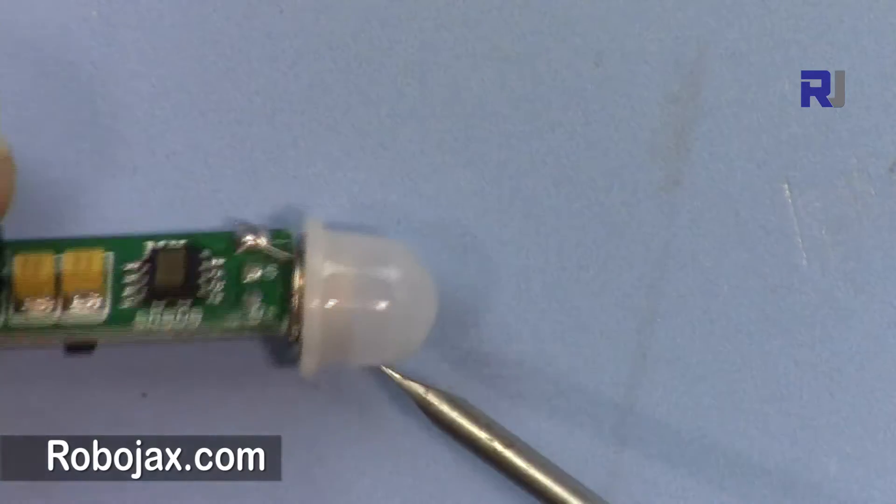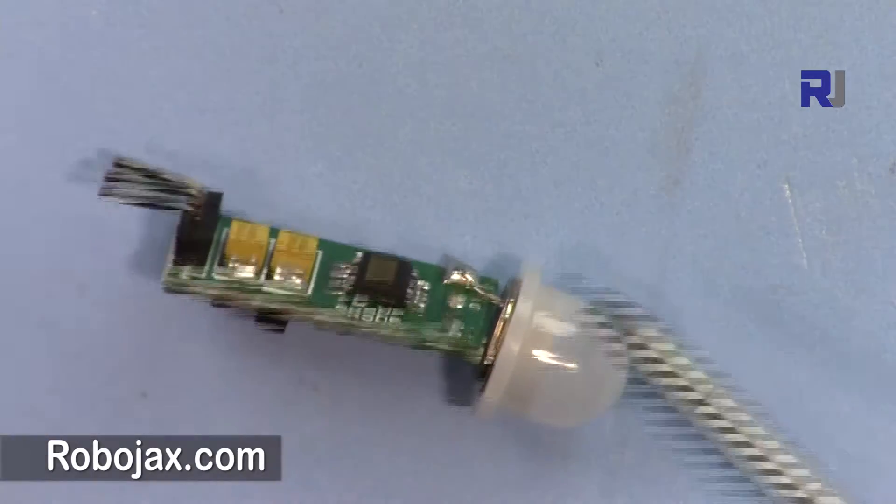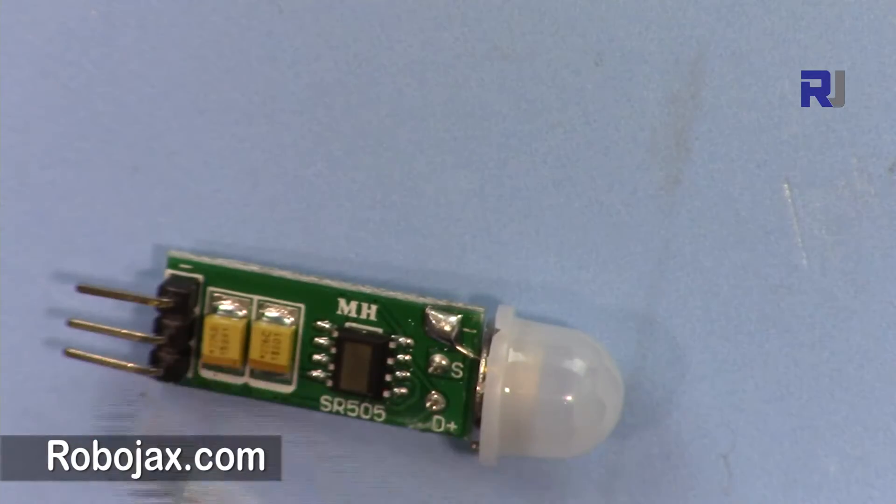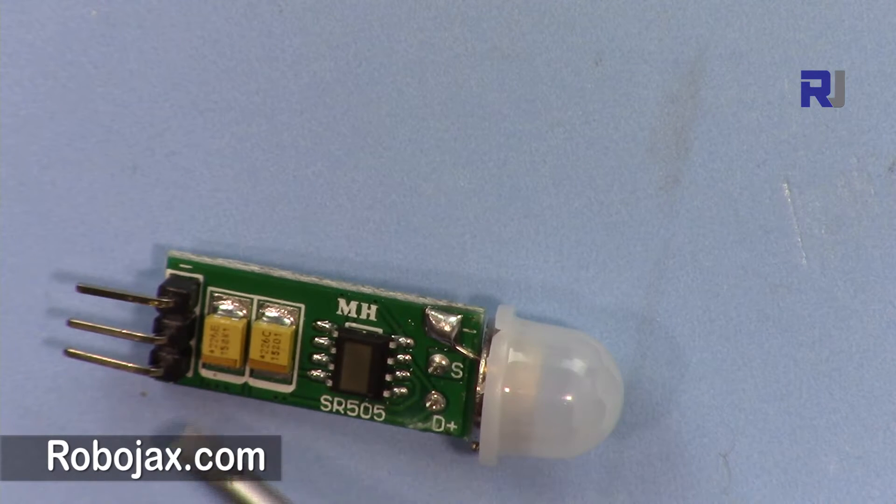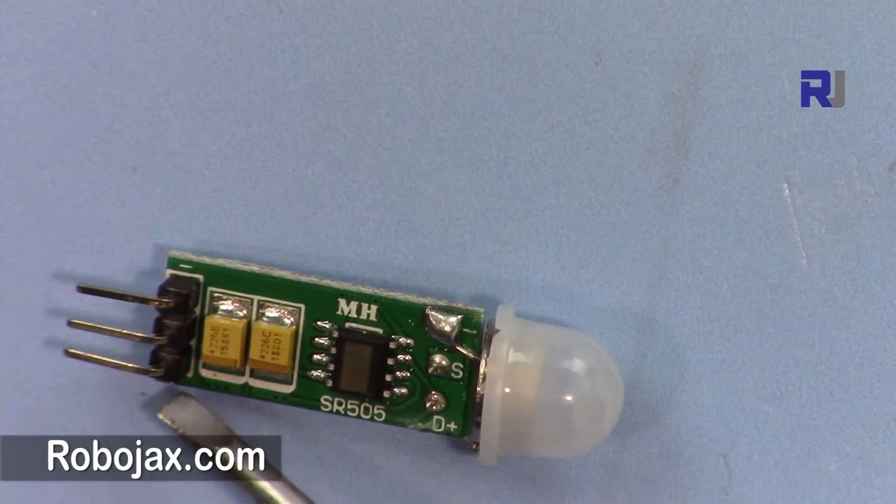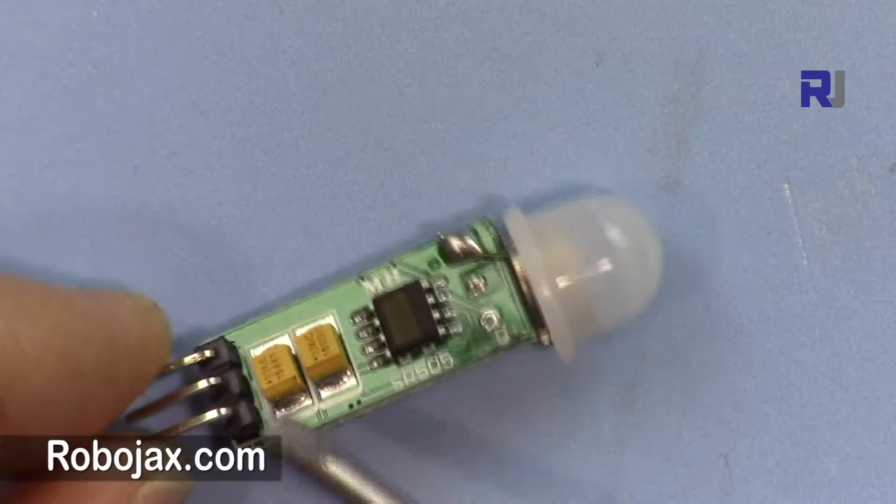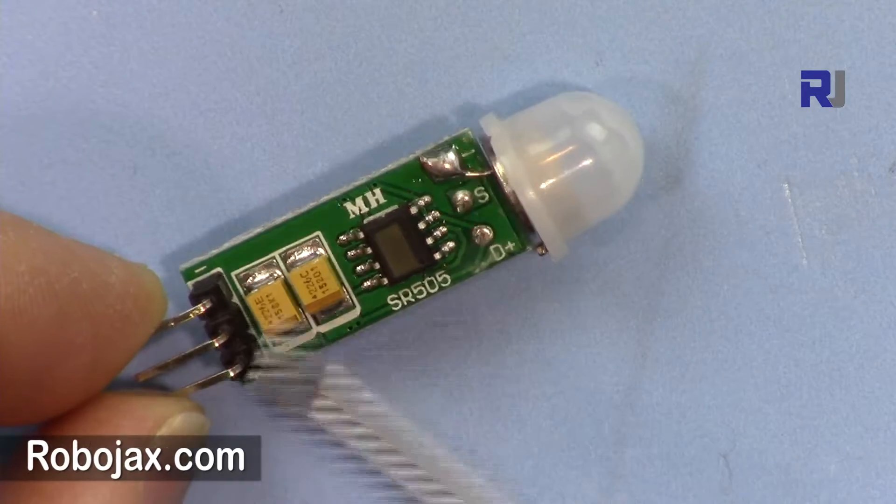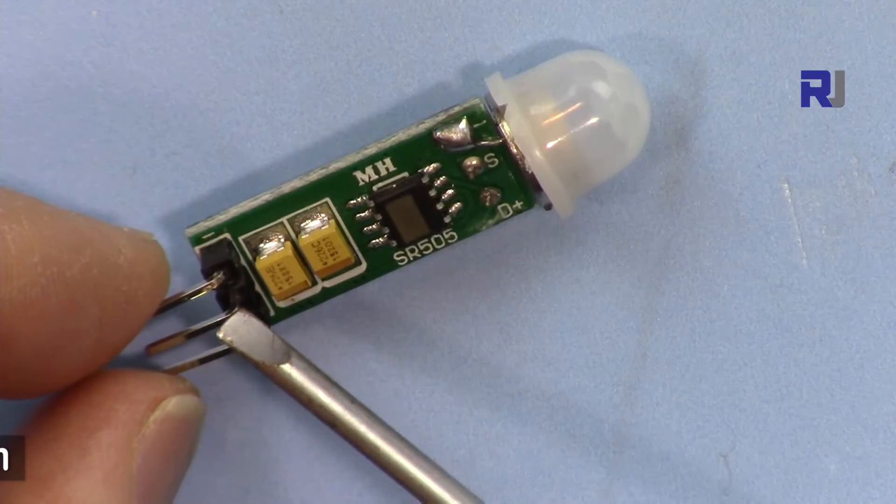This is the module as you can see here, very tiny. We have three connections. On this side it is labeled as plus, so you will connect it to the plus 5 volts. From here you connect to the negative for ground, and this is the signal out from the middle.